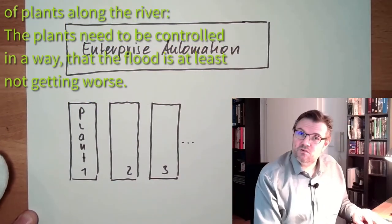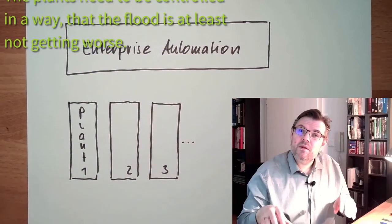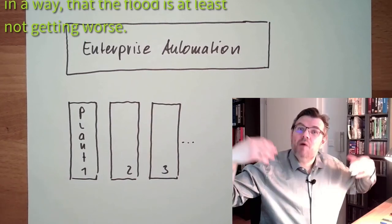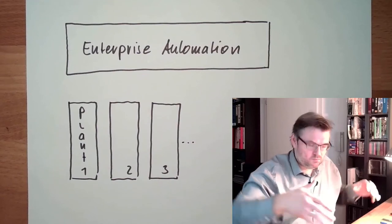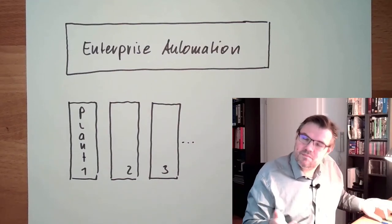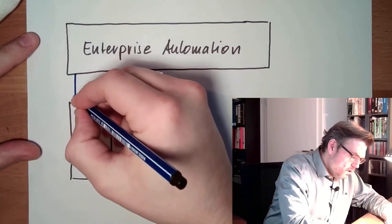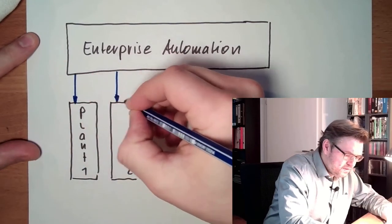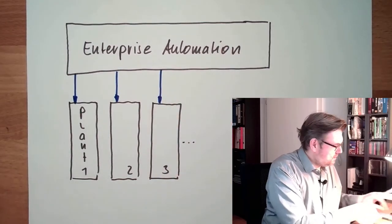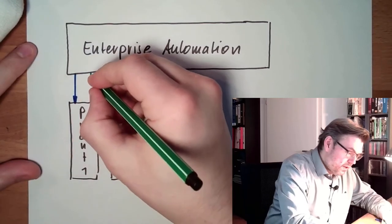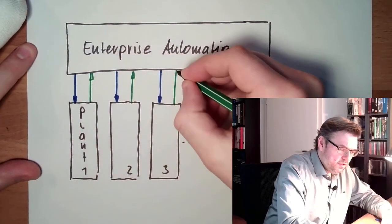So this balancing, this overall balancing, must be done somewhere and this is here in enterprise automation. And maybe if there are smaller power plants, there's even above one instance which can control several enterprises. But however this is in the market. So here we are controlling the plants, getting information from the plants, because for instance what happens if there is a failure in the plant and suddenly a unit is not available?